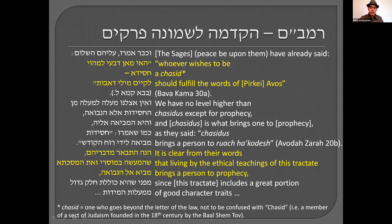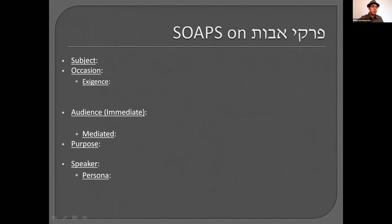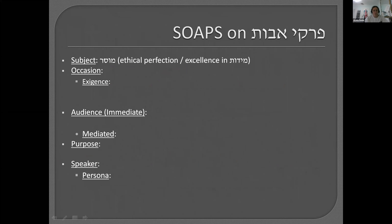According to the Rambam, what's the general subject of Pirkei Avos? Pretend it's a textbook — what class would it be a textbook for? Ethics. So Mussar, which you could translate as ethical perfection, excellence in mitzvos, or character development. Trick question: what was the occasion that led to the writing of Pirkei Avos? The danger that Torah would be forgotten — though that's really the occasion the Mishnah was written; it's not specific to Pirkei Avos.